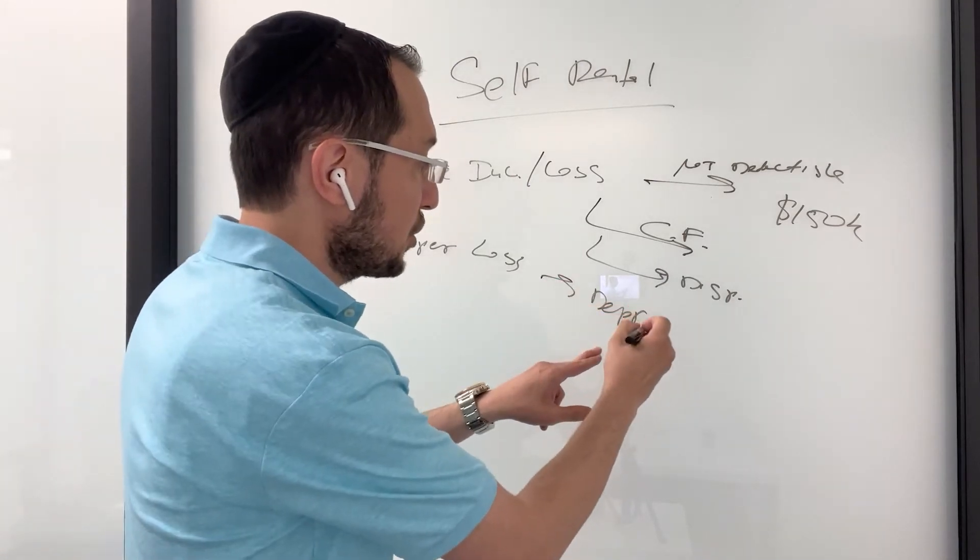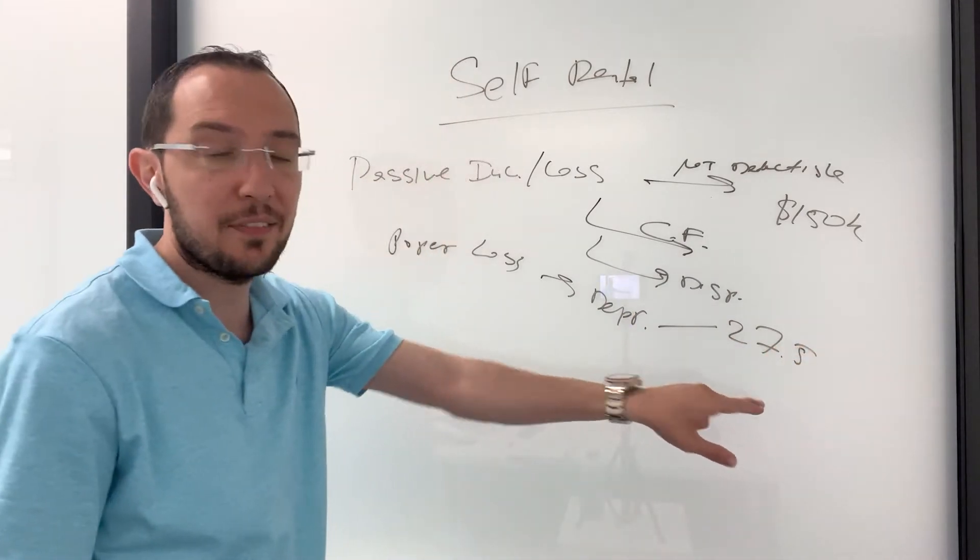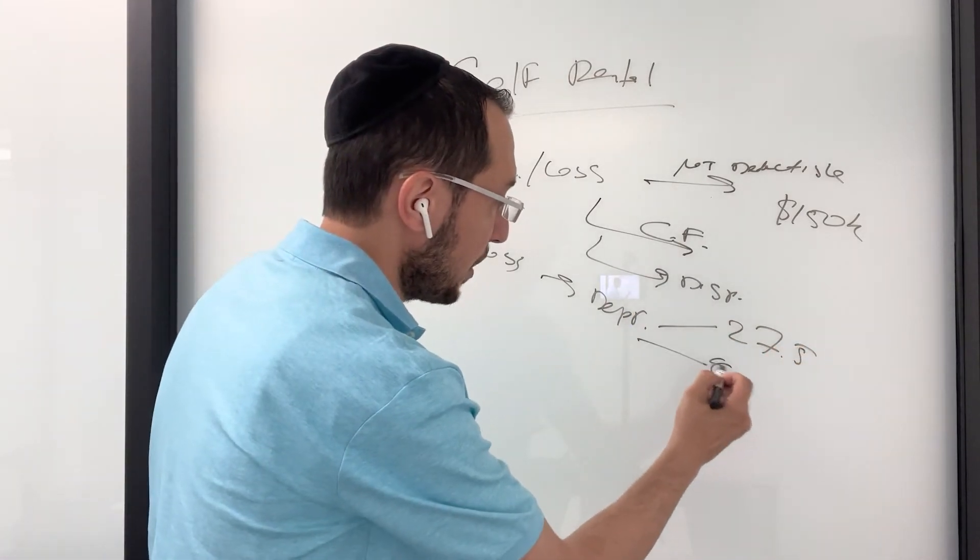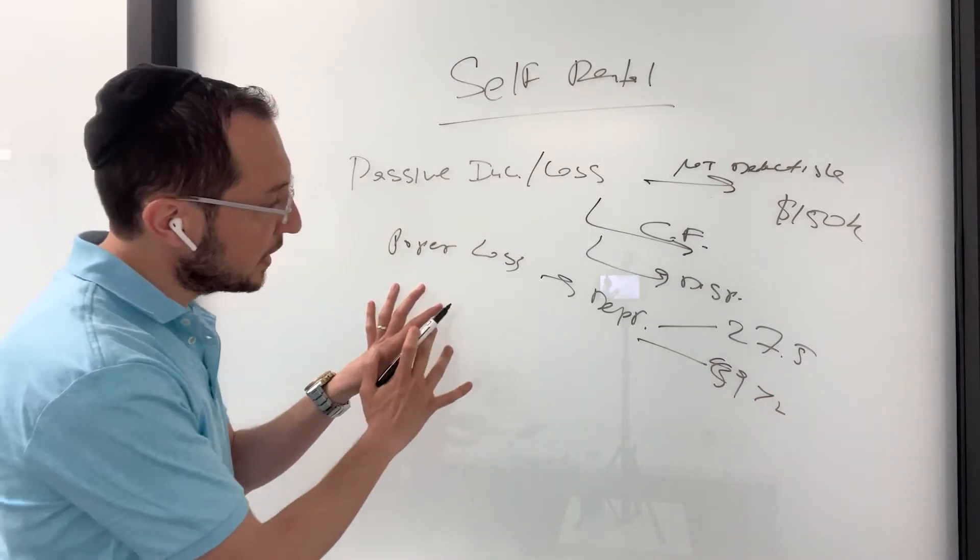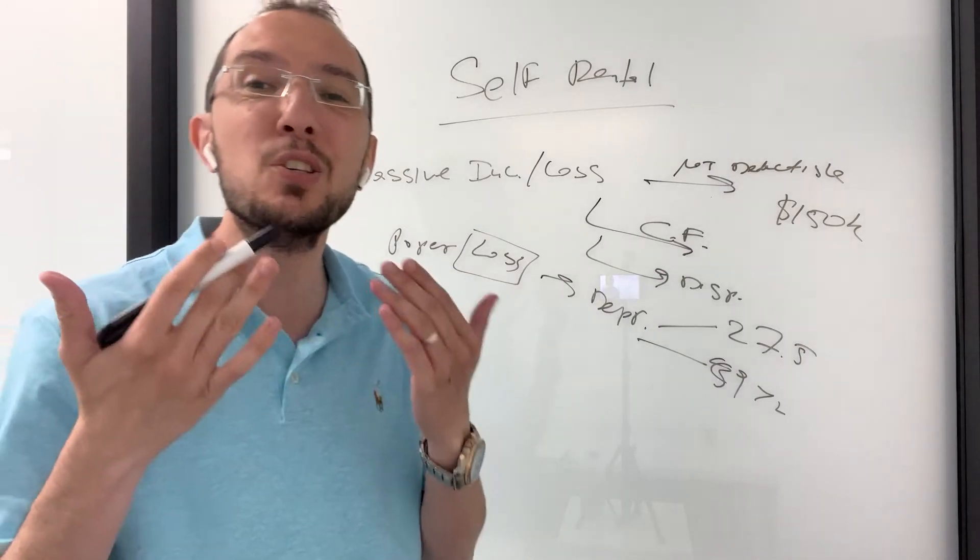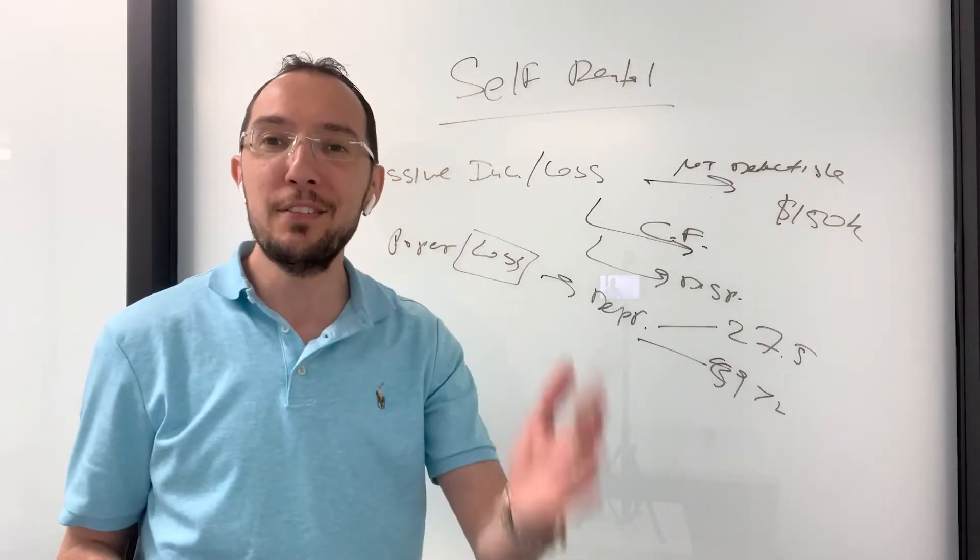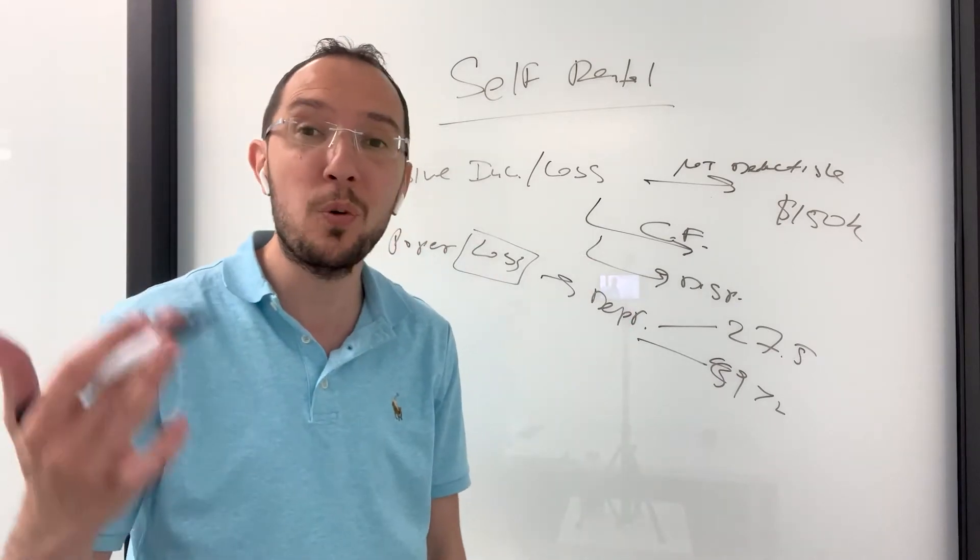Now, depreciation. If you bought a residential property, you depreciate it over 27 and a half years. If you bought a commercial property, it's 39 years. So that is really what helps you produce a loss from your rental activities.